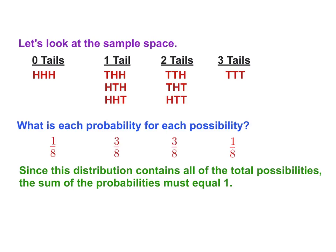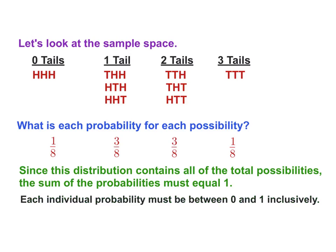A couple of things we need to know. The distribution contains all of the total possibilities. That means the sum of these probabilities has to equal one, because it's everything — everything is included. One of the things you're going to have to do in your homework is decide if you're actually looking at a probability distribution. One way to tell is if the probabilities add up to one. The other thing: each individual probability must be between zero and one inclusively. If any of these numbers are bigger than one or less than zero, then you're not looking at a probability distribution.